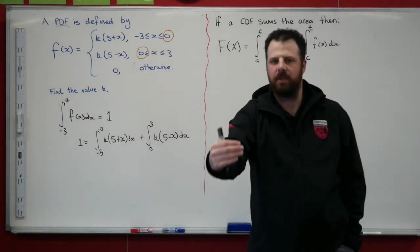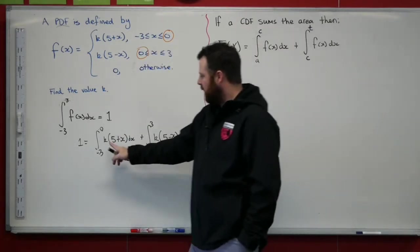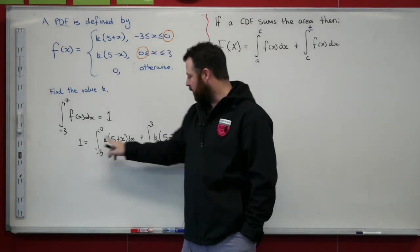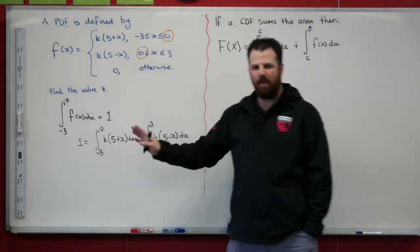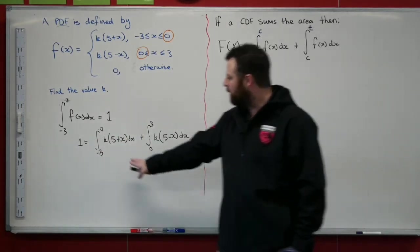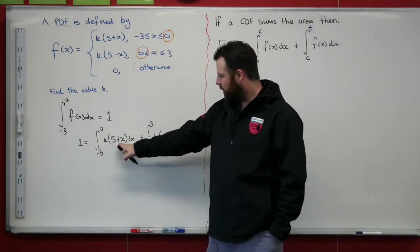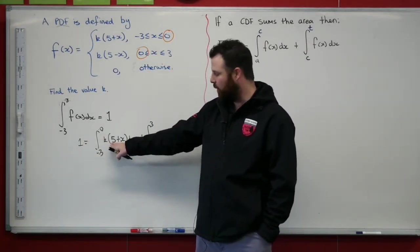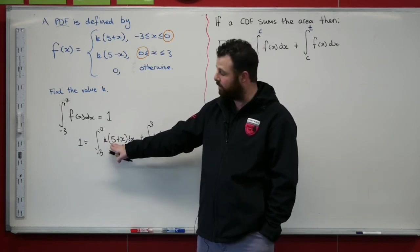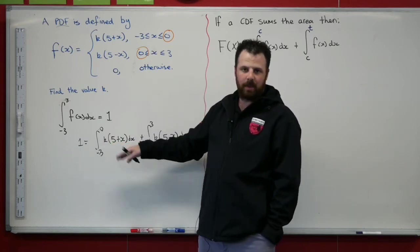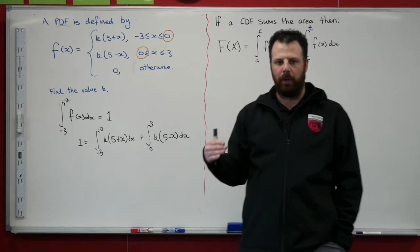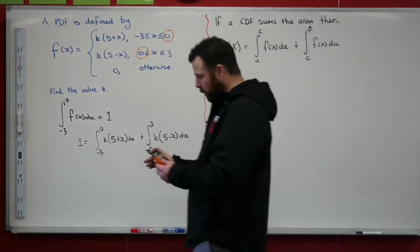So if we go through that right now, we know, I'm going to skip a step here but that's okay. We know that k, that's our constant, so I can take k out the front of those integrals. So if k comes out the front here, integrating 5 + x, well 5 gets an x, that becomes 5x. x becomes x squared over 2.